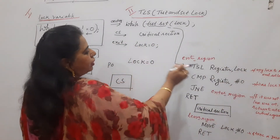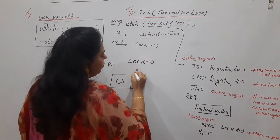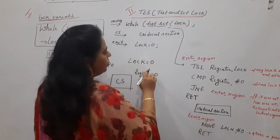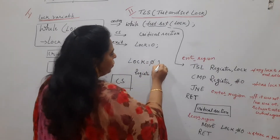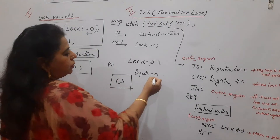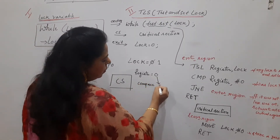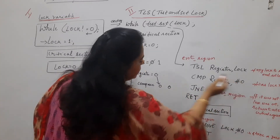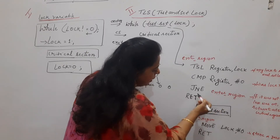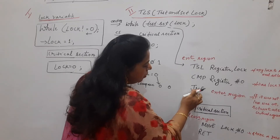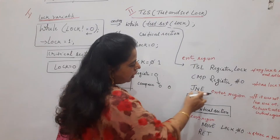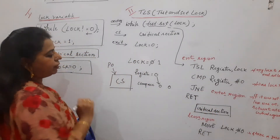So lock is equal to 0. You copy lock to the register — register gets value 0 — and TSL also sets lock to 1. These two things are done by this one instruction. Now compare the register contents with 0. The register contents are 0, so you are comparing 0 with 0. The next instruction is jump on not equal to 0 — if not equal to 0, control comes back to the top. In this case it is equal to 0, so P0 will enter the critical section.